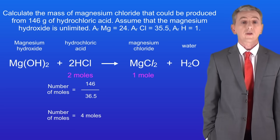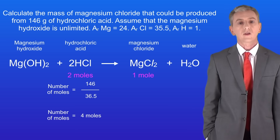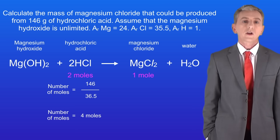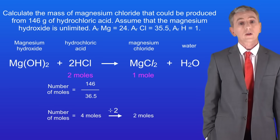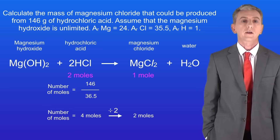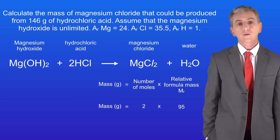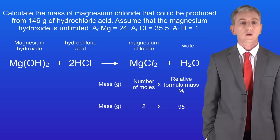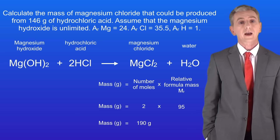The chemical equation tells us that 2 moles of hydrochloric acid make 1 mole of magnesium chloride, so we have to divide our number of moles by 2. So 4 moles of hydrochloric acid will make 2 moles of magnesium chloride. To calculate the mass, we multiply the number of moles, which is 2, by the relative formula mass of magnesium chloride, which is 95. This gives us a mass of 190 grams, and that's our final answer.